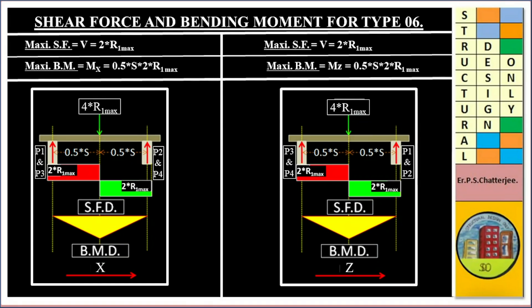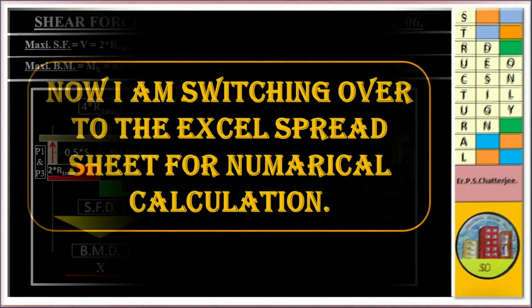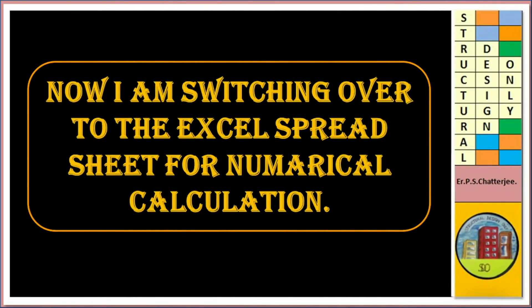Bending moment in Z direction is equal to 0.5 times S times 2 times R1 Max. Now I am switching over to the Excel spreadsheet for numerical calculation.